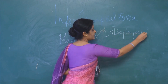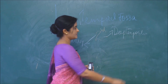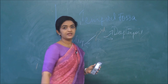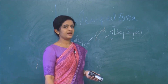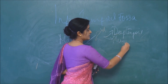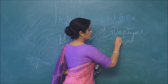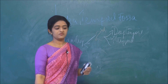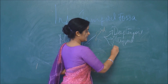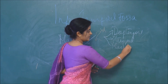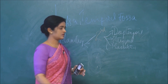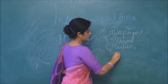The temporalis muscle is supplied by the deep temporal branches. The pterygoid muscles — medial and lateral — are supplied by the pterygoid branches. The masseter, which when cut reveals the infratemporal fossa, is supplied by the masseteric branches. And the fourth branch goes to the buccinator, which you call the buccal branches.